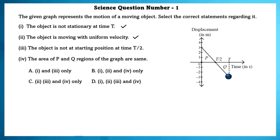The object is not at the starting point at time t/2. Since we don't know if the exact starting point of the object is at t/2, we will not consider this statement as true or false. Fourth one: the area of P and Q region of the graph are the same — yes, this is true.